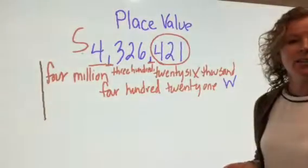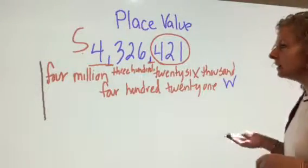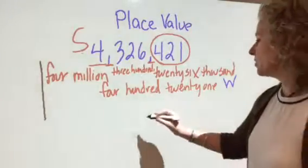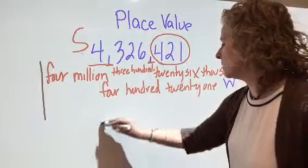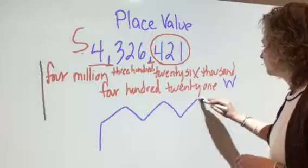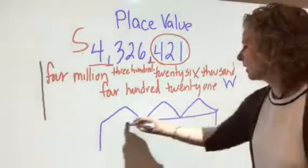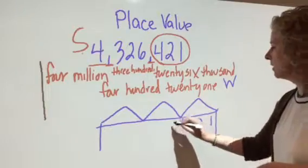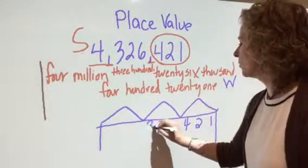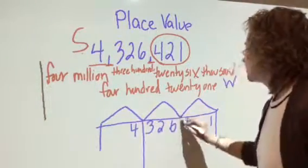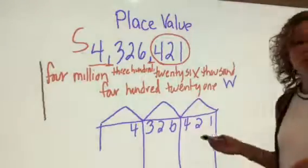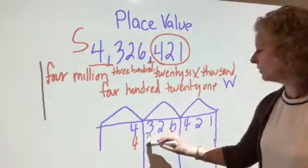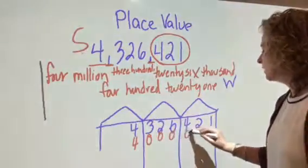Now I need to do expanded form. This I do want to see your work. I want to see the house. So when we're doing this one, you're going to fill in your number. 4, 3, 2, 6, 4, 2, 1. And remember how I told you, all you have to do is write down the first digit and everything else turns to zeros.